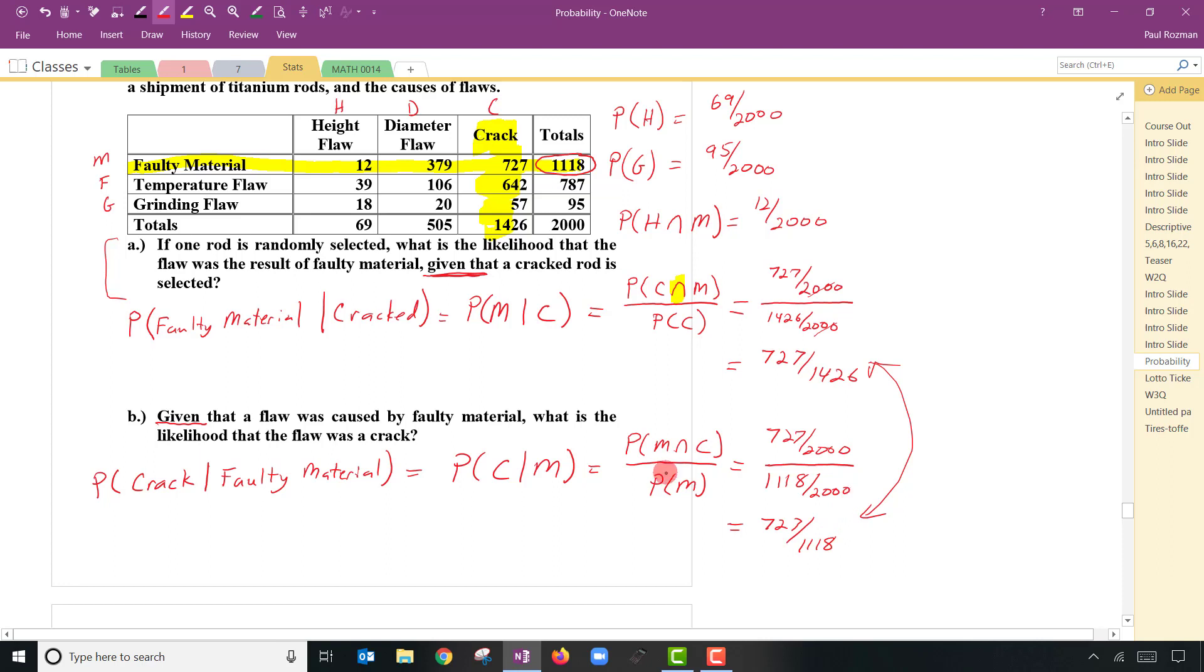For me, I don't run through this formula each time. I basically just look at these things and go, well, let's repeat this question. I want to know the probability of a crack given faulty material. Well, if I am given that I have faulty material, I know that my data is in this row. Like I've been restricted to this row. I know I have one of the faulty material titanium rods. So I know that this is my total. The given part tells you the total. So it's almost like this is a divide by sign. Your given symbol kind of gives you the total. And then find the number of cracks that are also in that row, which is the 727. And you can just jump to the answer that way.